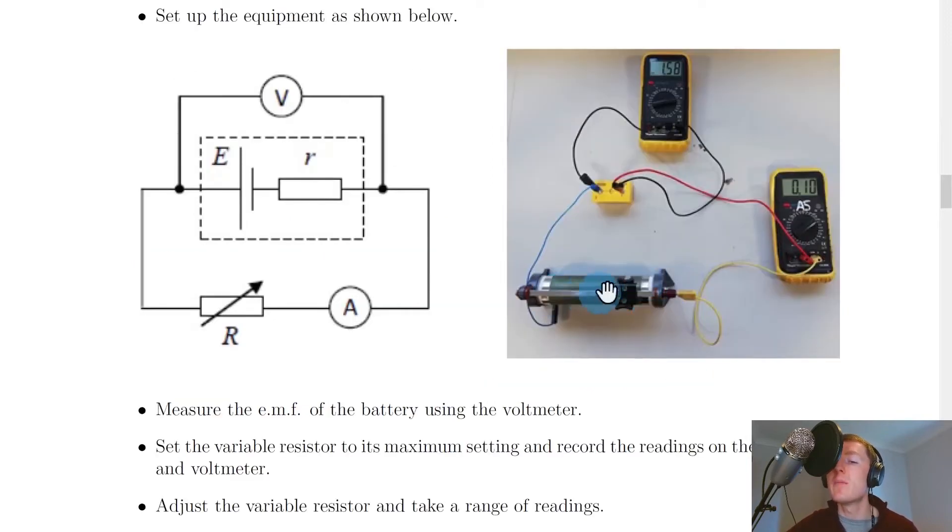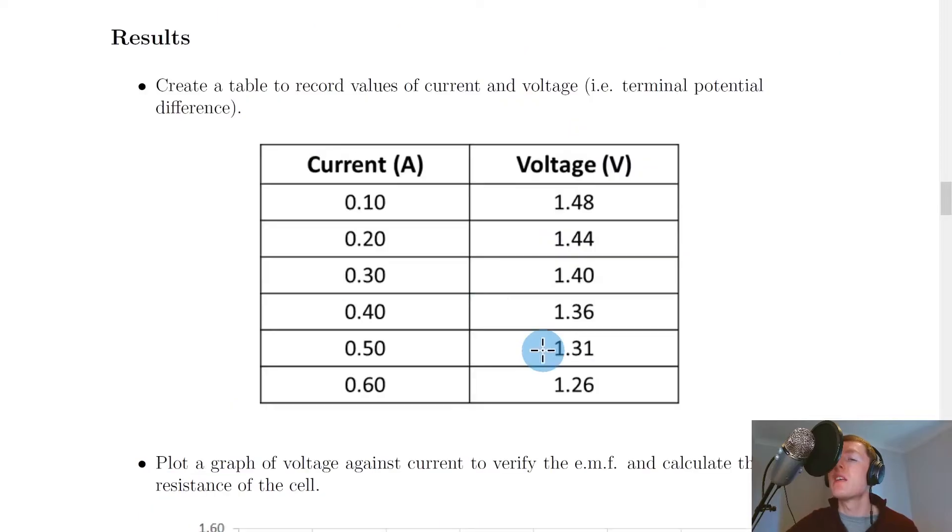So by adjusting the variable resistor here you're going to be changing the resistance in the circuit which in turn is going to change the current in the circuit. So that is going to be displayed on the ammeter here and that is going to change the voltage across the cell. And what you might end up with is something that looks a bit like this.